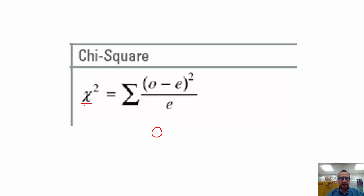And so the basic gist is the smaller the value that you get for chi-square, the closer your observed values are to expected values. So that's a concept that we're going to apply here.